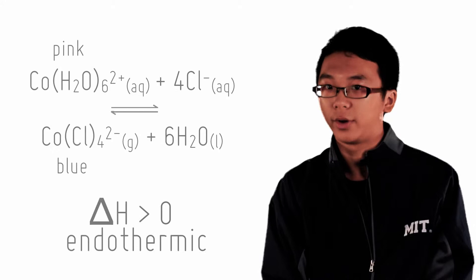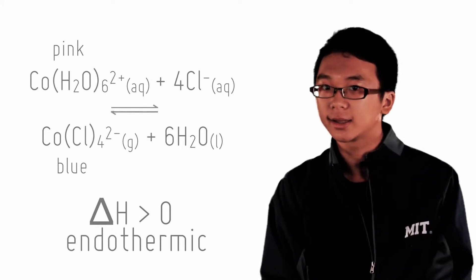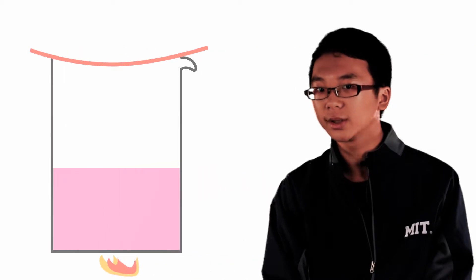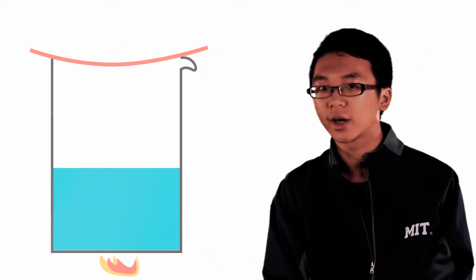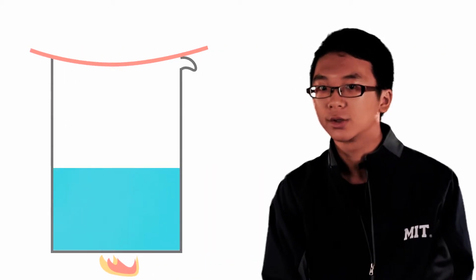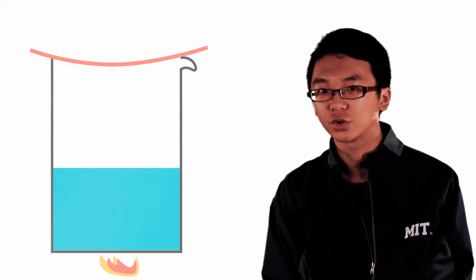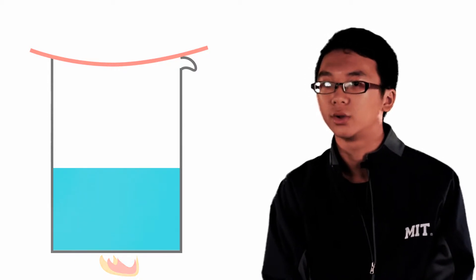This is an endothermic reaction, which means that it takes in heat as it reacts. Say I increase the temperature. Le Chatelier's principle tells us the system will want to counteract the effects of increasing temperature, so it wants to decrease the temperature. In that case, which direction of reaction should proceed in order to decrease the temperature?